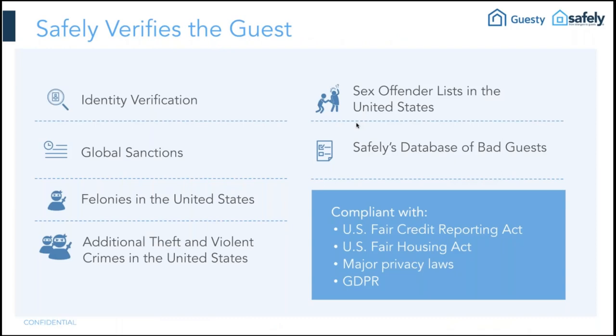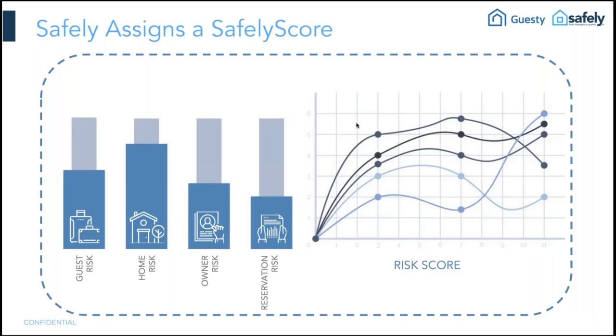First we verify your guest. Depending on your risk tolerance, we can verify their identity, check for global sanctions like money laundering and terrorist watch lists, check for felonies in the United States, and definitely sex offender lists. More importantly, we keep a database of bad guests — those who should never rent again in your homes or any home without the right supervision. This process is compliant with the GDPR, the US Fair Housing Act, and the US Fair Credit Reporting Act. Because each country has different types of data, we can't complete all checks on guests from every country, but we do the best we can within those constraints.